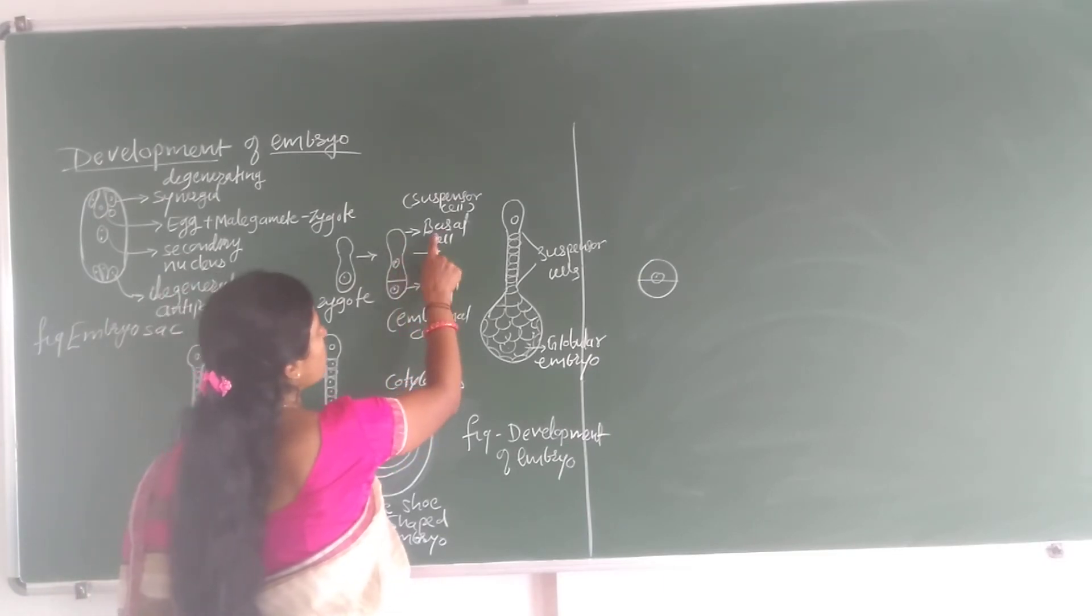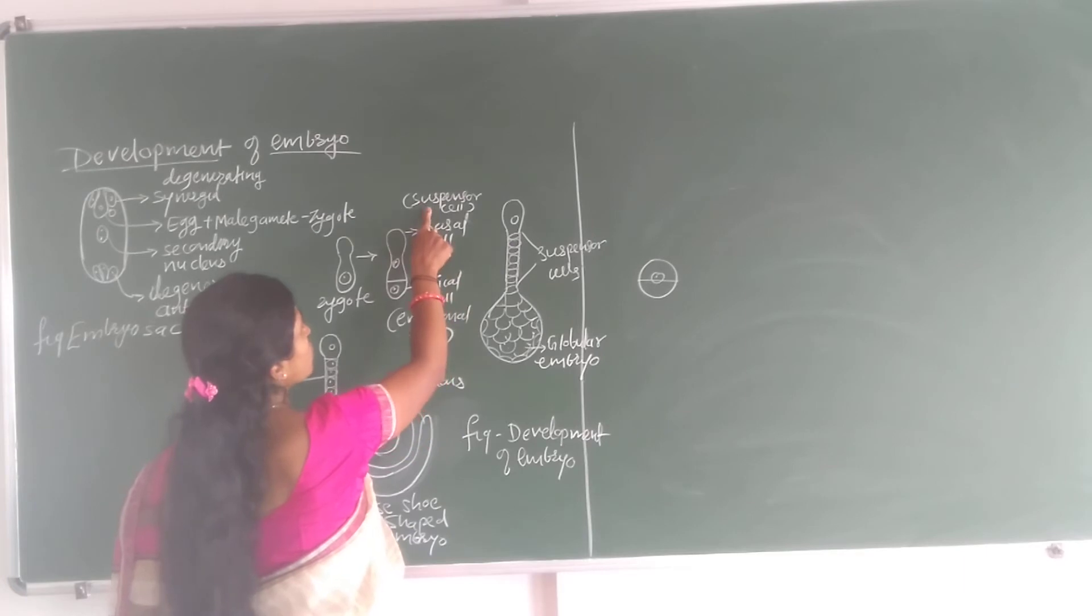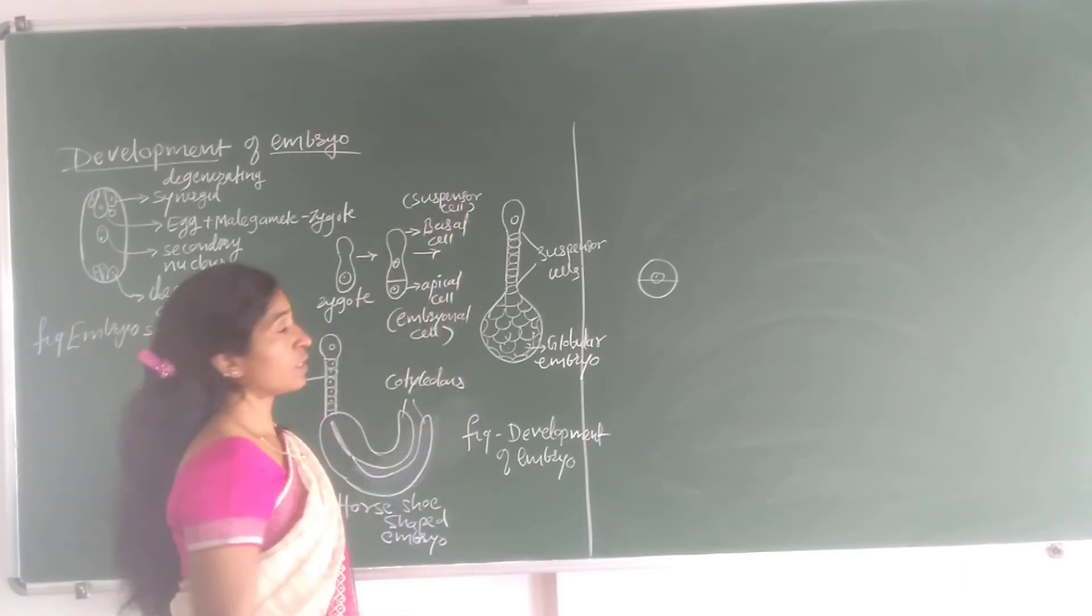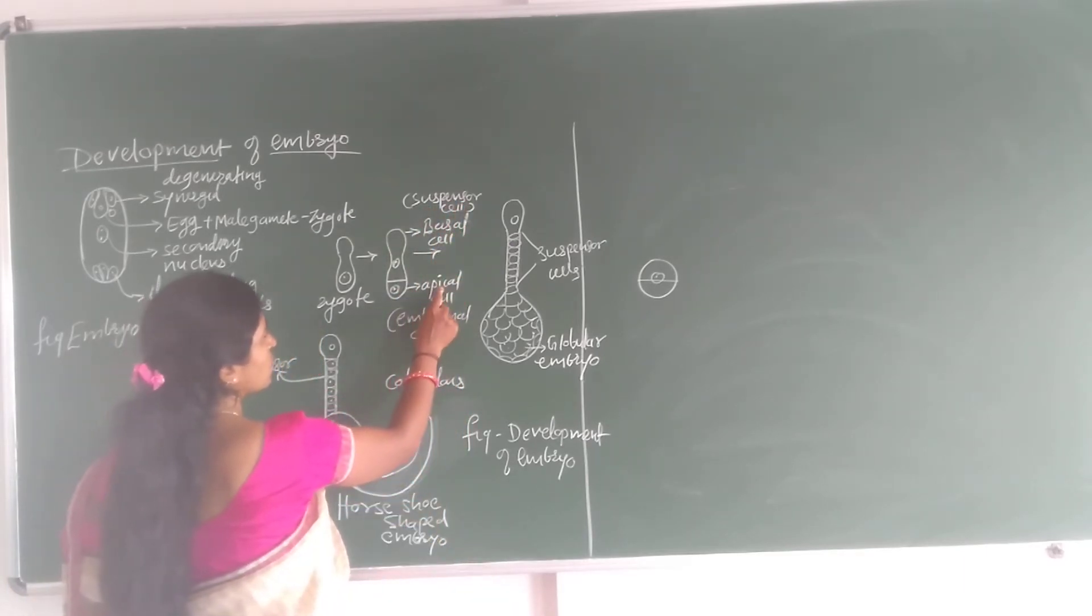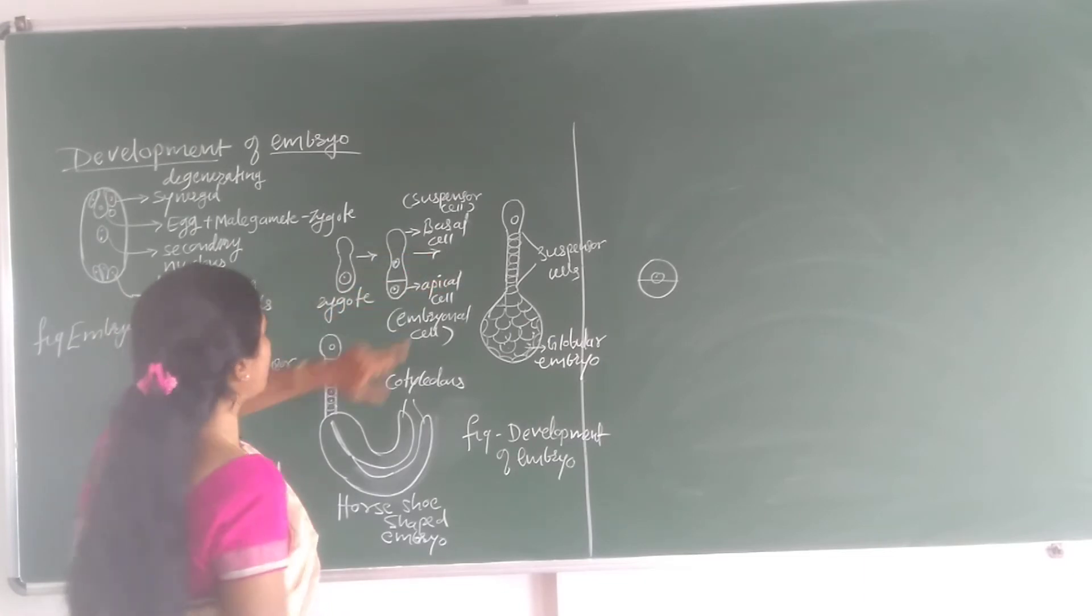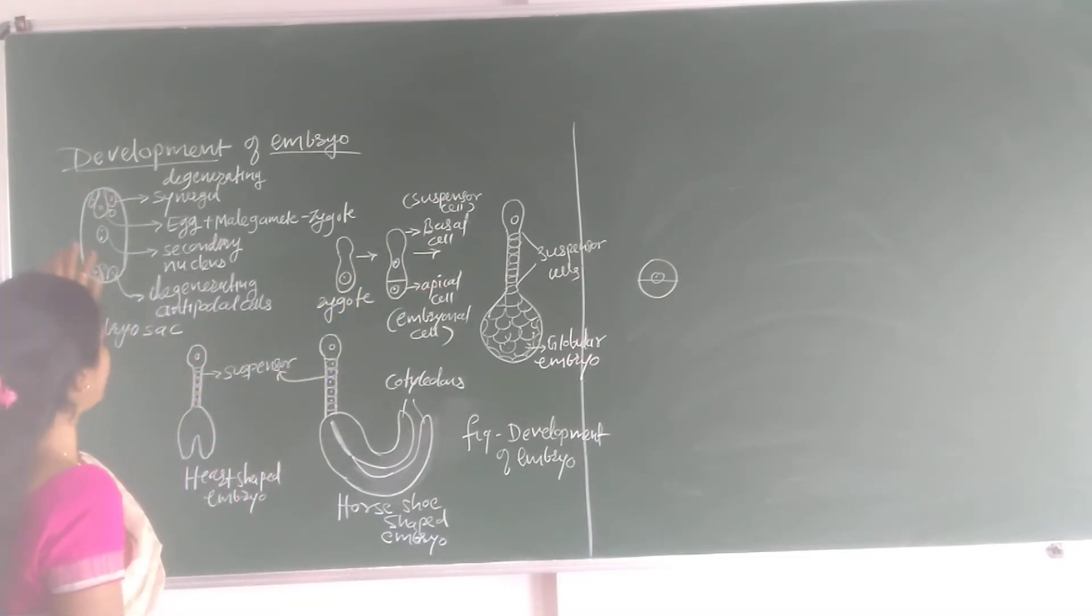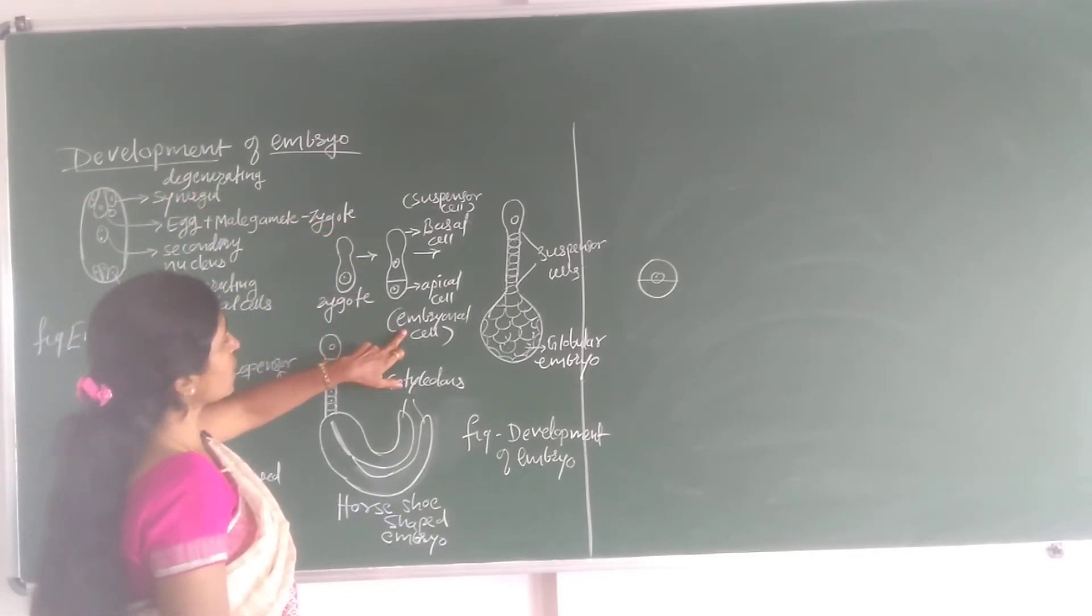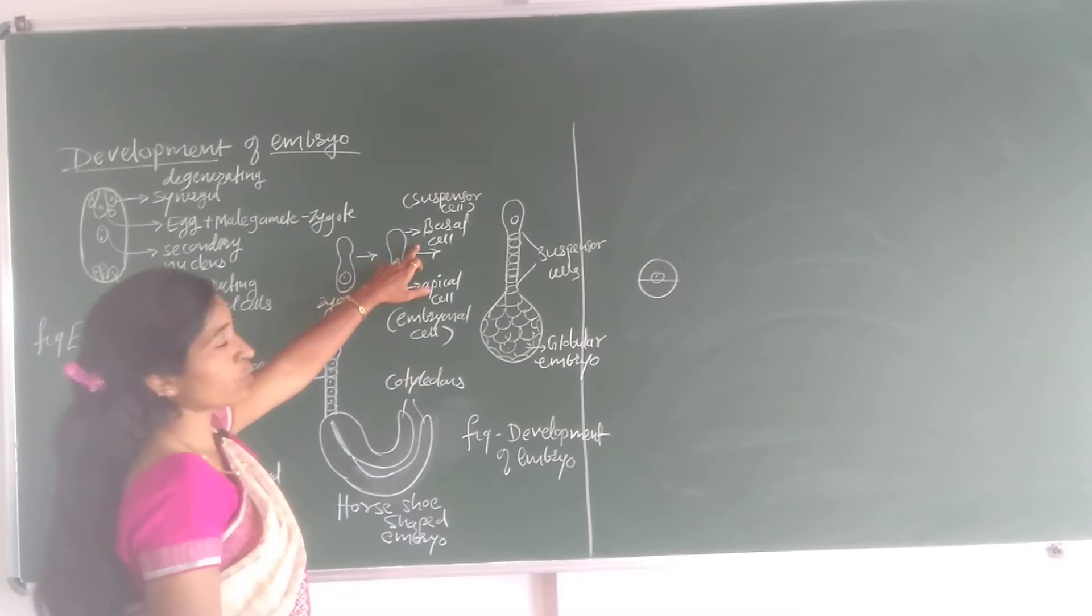This larger cell is called a basal cell or it is also called a suspensor cell. And smaller cell is called an apical cell and it is also called as an embryonal cell. This basal cell is present toward the micropylar end. You know that this is embryo sac and that egg is present toward the micropylar end, means that embryonal cells are also present toward the micropylar end.